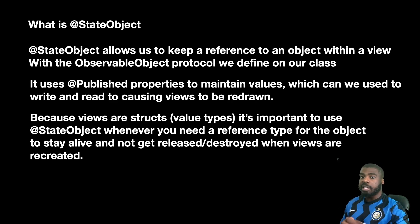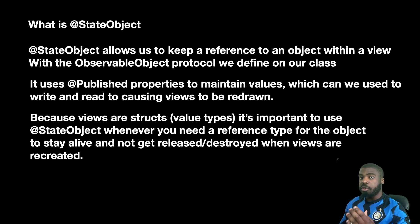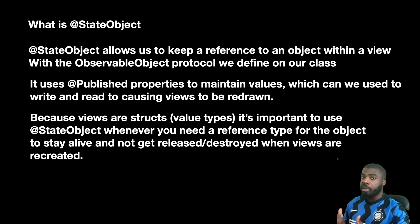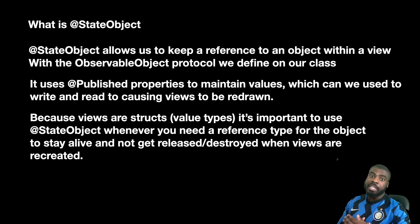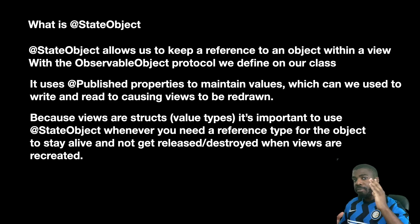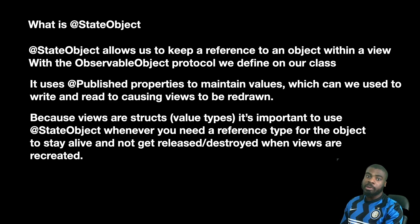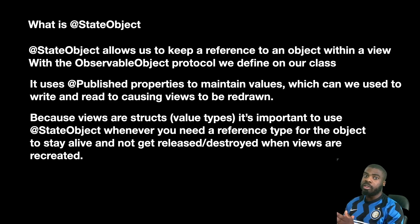Without the @StateObject property wrapper, if you had a view model and you changed a property in it, whenever your struct gets re-invalidated and redrawn, that change would be gone. What @StateObject allows us to do is essentially use something like a reference type within a SwiftUI view.